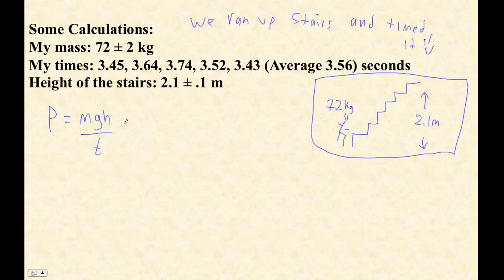I'm just going to show you how to do this. So there's my formula. My power output was 72 kilograms times 9.81 times 2.1. Here are my times — I just made all this up — and I averaged those, because that's a reasonable thing to do. Then I got 3.56.